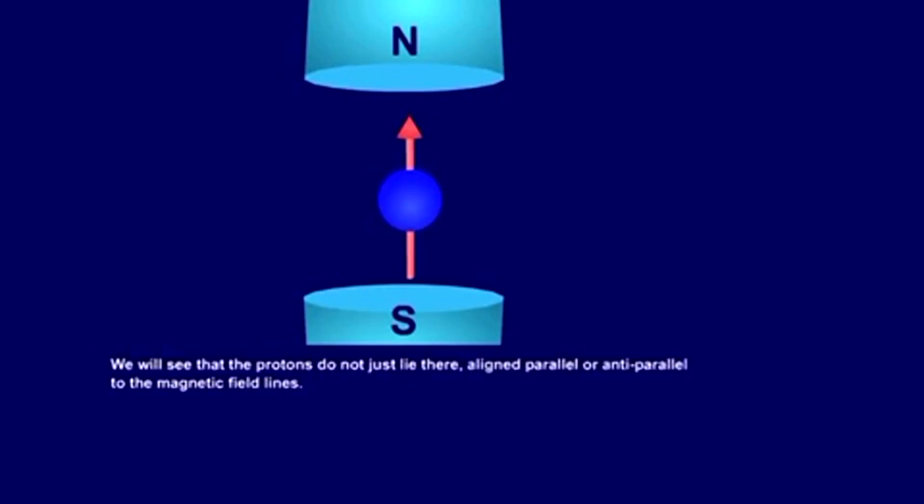We'll see that the protons do not just lie there, aligned parallel or anti-parallel to the magnetic field lines. Instead, they move around in a certain way. This type of movement is called precession.